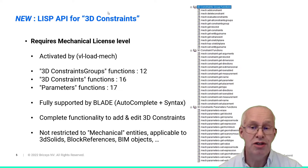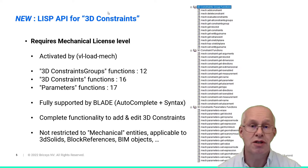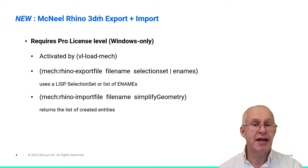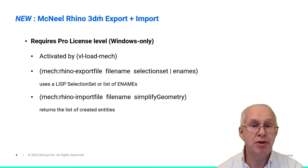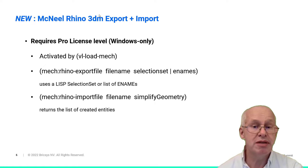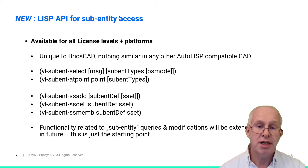All the new LISP functionality is also supported by BLADE in autocomplete and syntax tooltips. Another minor extension is provided by two new functions to export and import McNeel Rhino files. Some flexibility is given for both export and import functions, like the way an entity set is specified and whether imported geometry shall be simplified. The import function returns the list of created entities directly to simplify LISP code development.